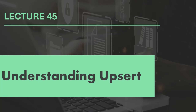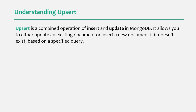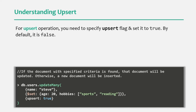What do we mean by Upsert? Upsert is a combined operation of insert and update in MongoDB. It allows you to either update an existing document or insert a new document if it does not exist, based on a specified query. For example, let's say we want to filter all the documents where the name is Steve, and for those documents, we want to set the age to 20 and the hobbies field to a given array.